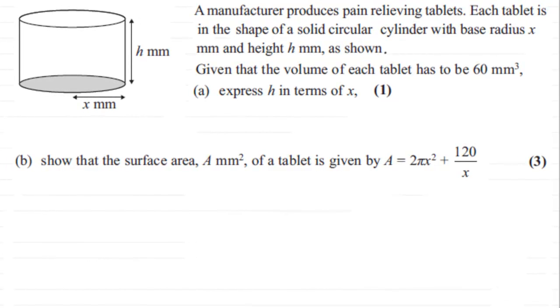Hi. Now in this question, what we're given is this cylinder here, a solid cylinder, which represents a pain relieving tablet. And we're told that it's got a radius of x millimeters and a height of h millimeters. And the volume of each tablet is 60 millimeter cubed.